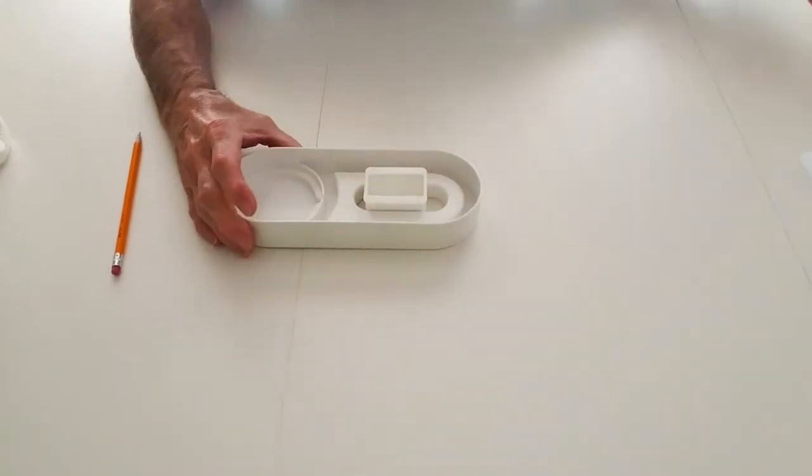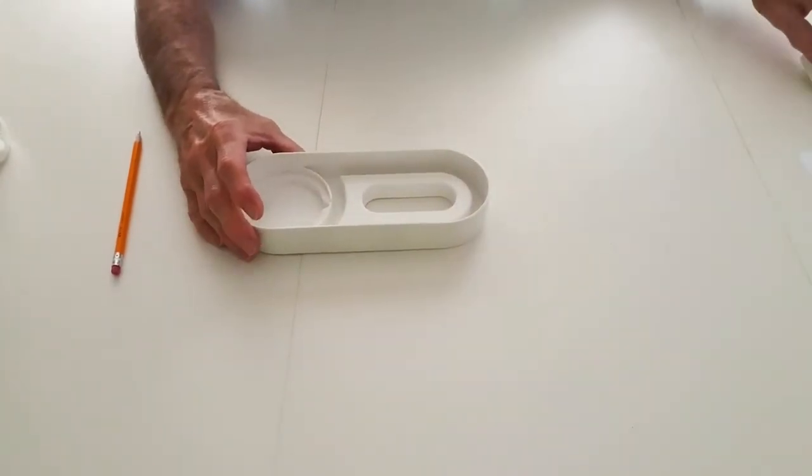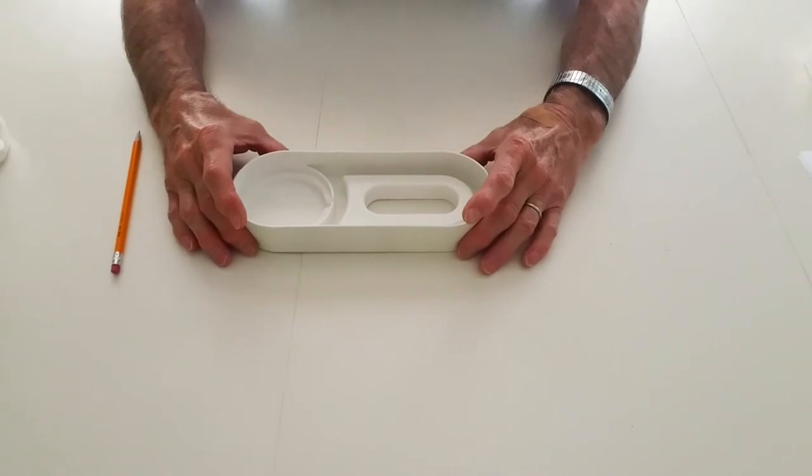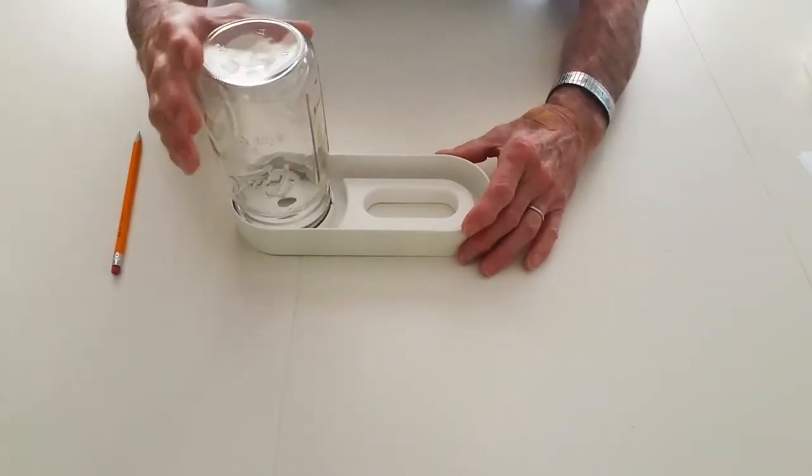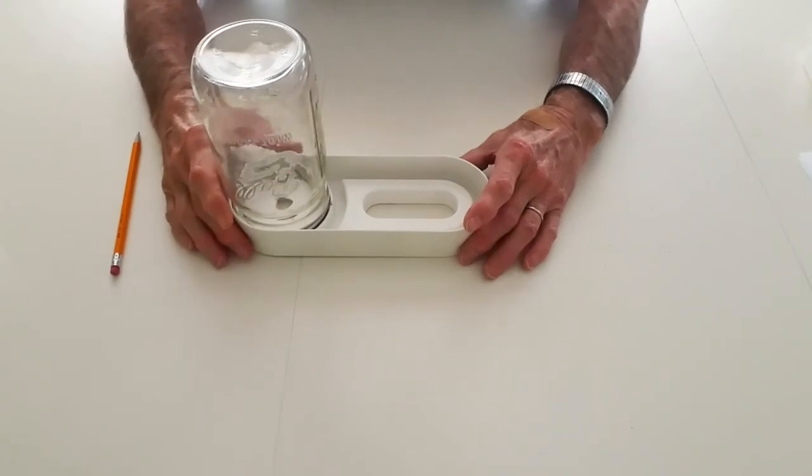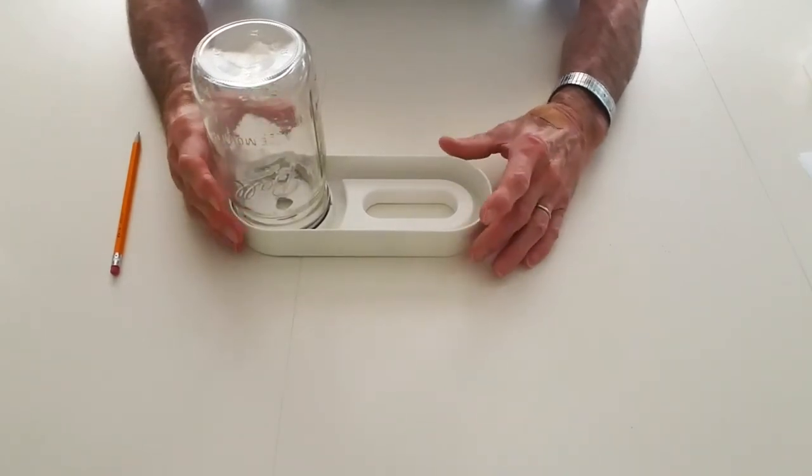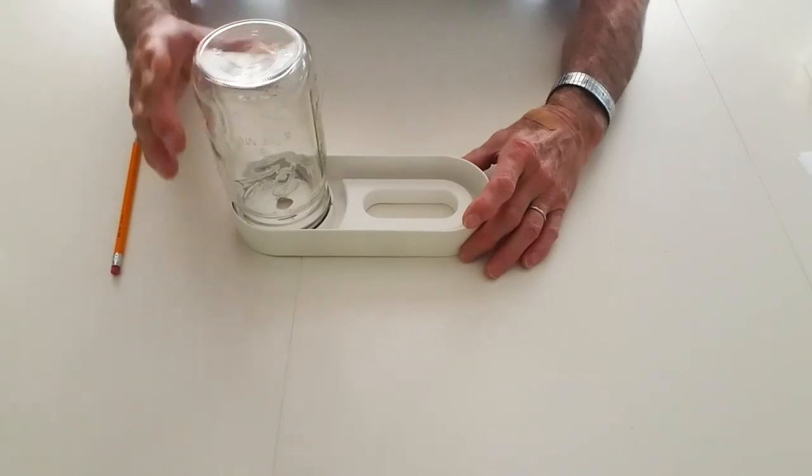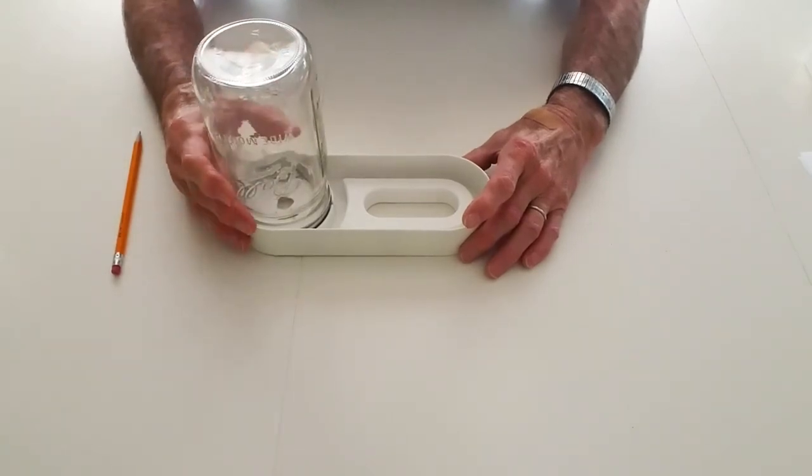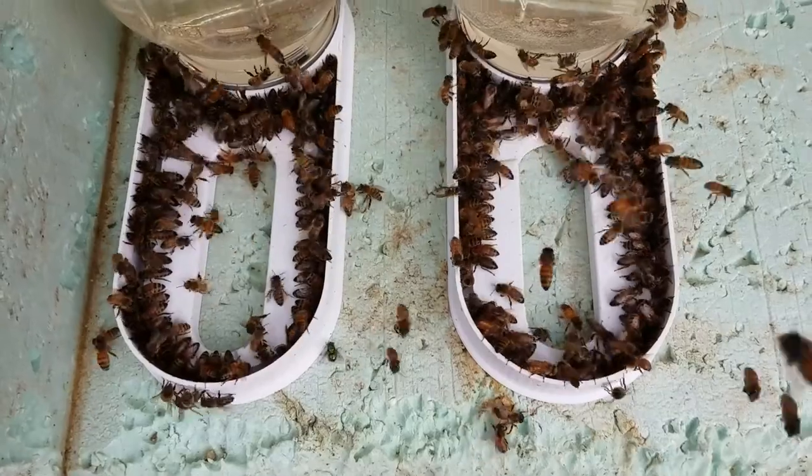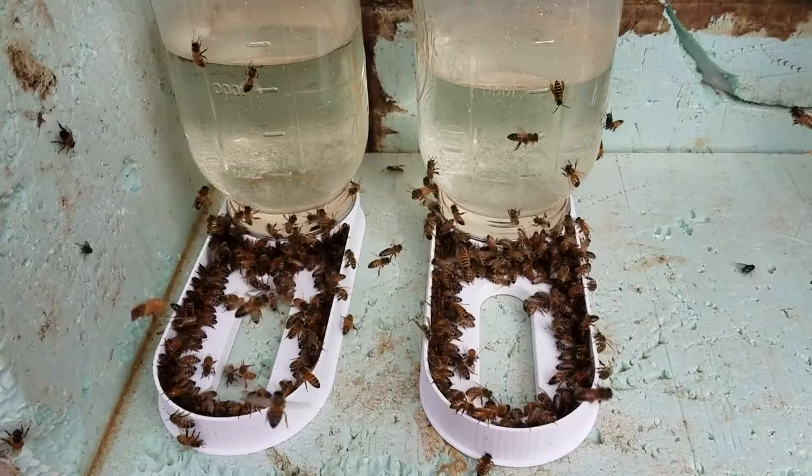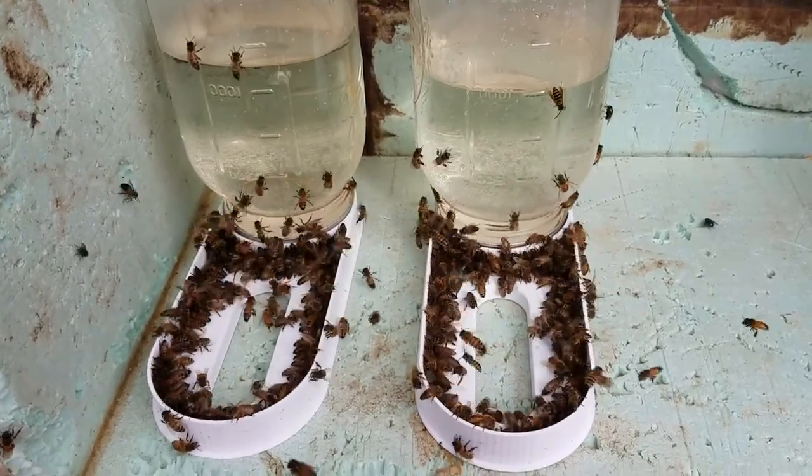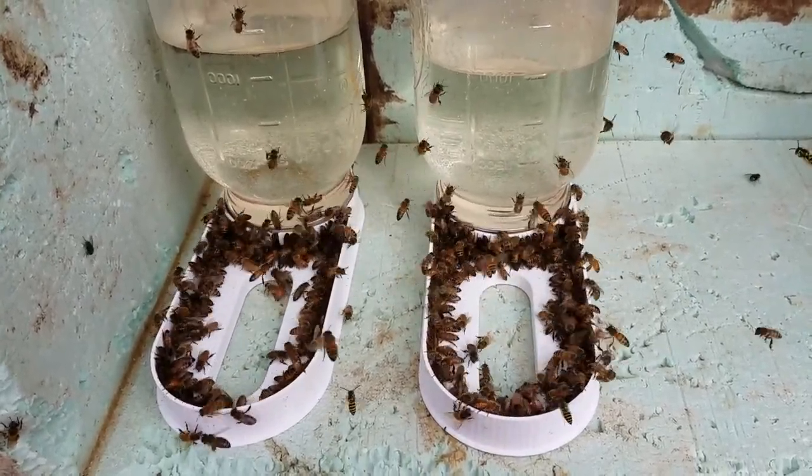In the open feeding setup, basically all you need is the bee buffet base and whichever jar you want to use. It's a simple process, and the syrup is easily monitored either way you do it, whether it's open or hive-top feeding. With open feeding, when the bees are so involved, it's better to wait till they pretty much empty the jar and thin out before you try to refill it, because they are very involved in the feeding process.